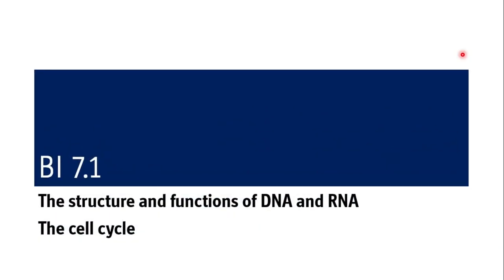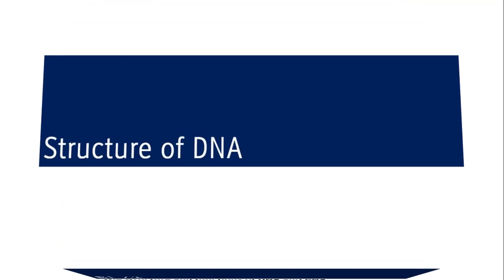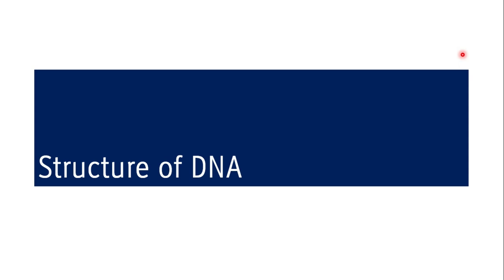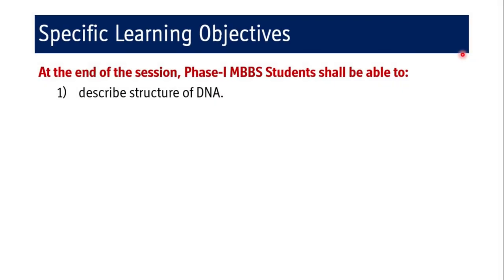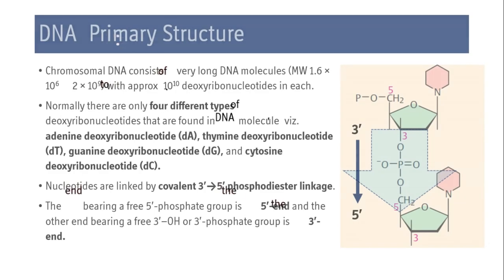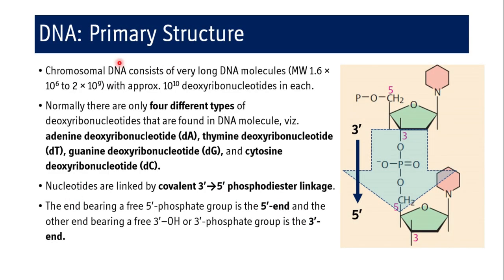This session is covered under BI 7.1, where we are dealing with structure and functions of DNA and RNA and the cell cycle. This particular session we are going to deal with structure of DNA. The specific learning objective is that at the end of the session, a phase one MBBS student shall be able to describe the structure of DNA.